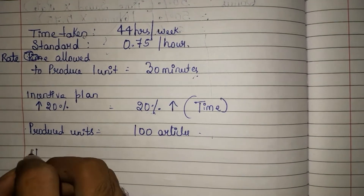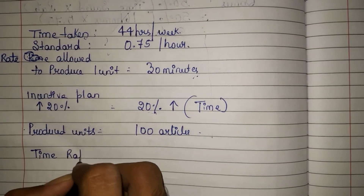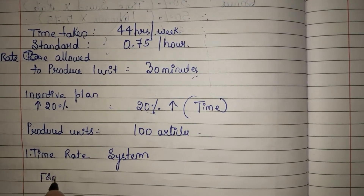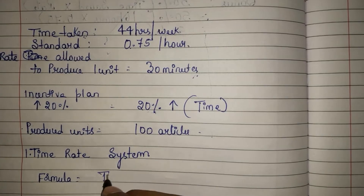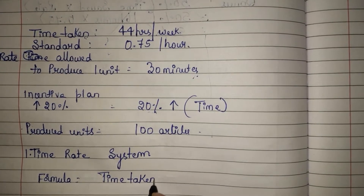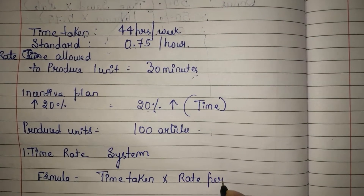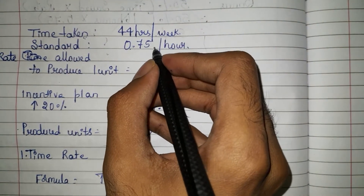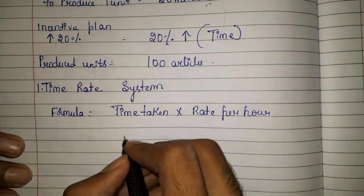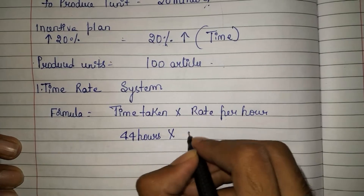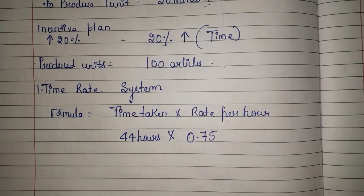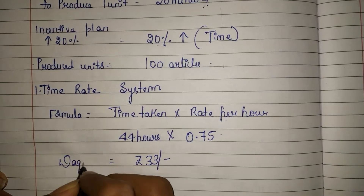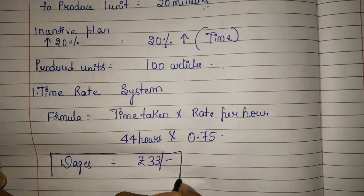First, let us see how to calculate using the time rate system. To calculate under the time rate system, the formula is: time taken multiplied by rate per hour. Here, the time taken is 44 hours and rate per hour is 0.75. So 44 into 0.75 gives us 33 rupees. Under the time rate system, the worker is getting wages of 33 rupees.